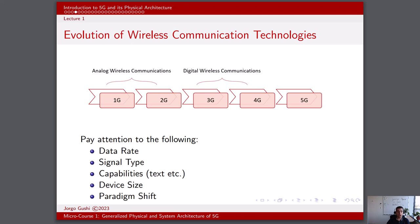1G, or the first generation, was introduced in the 1980s. Data rates included analog voice calls with data rates around 2.4 kilobits per second. Analog signal transmission used frequency division multiple access, or FDMA. Its capabilities were limited to voice calls and lacked data services. Device sizes were very large and bulky analog mobile phones. First generation wireless technology laid the groundwork for mobile communication, primarily enabling voice calls over wireless networks.